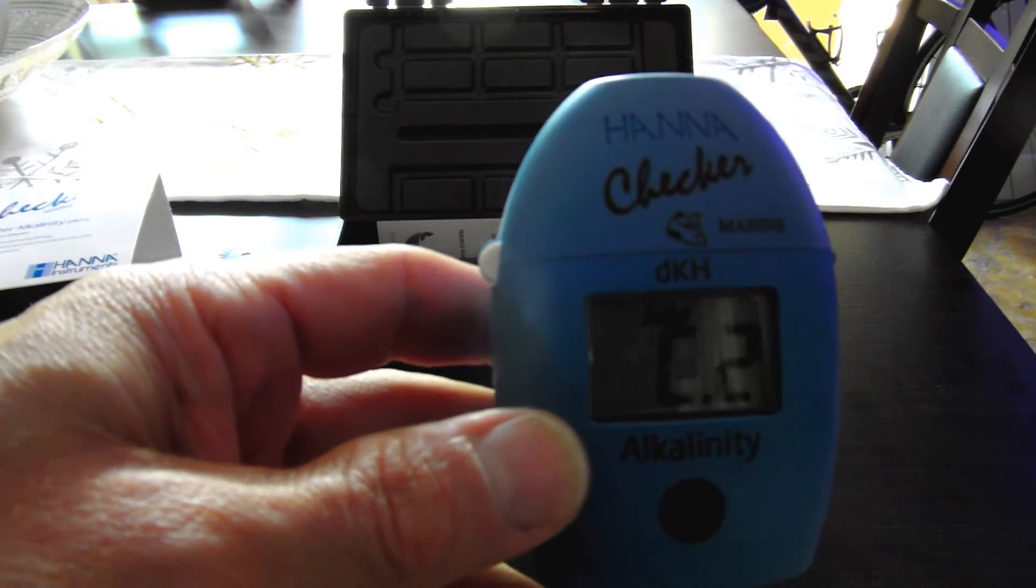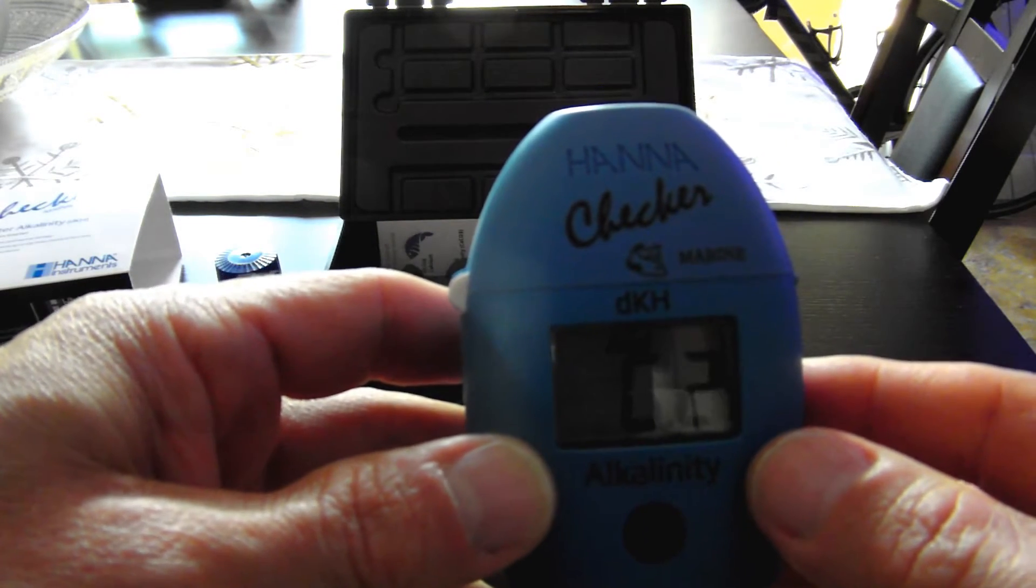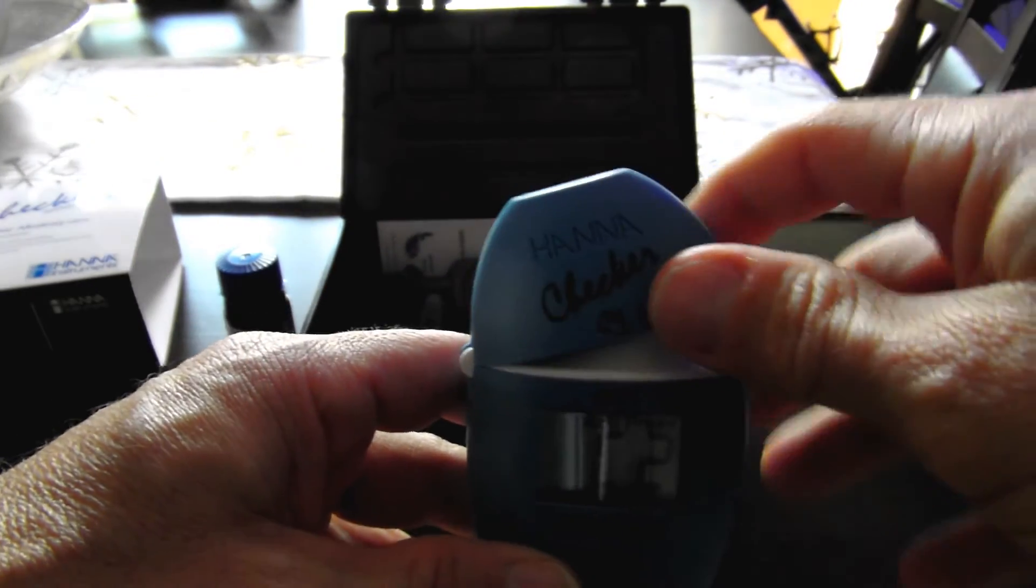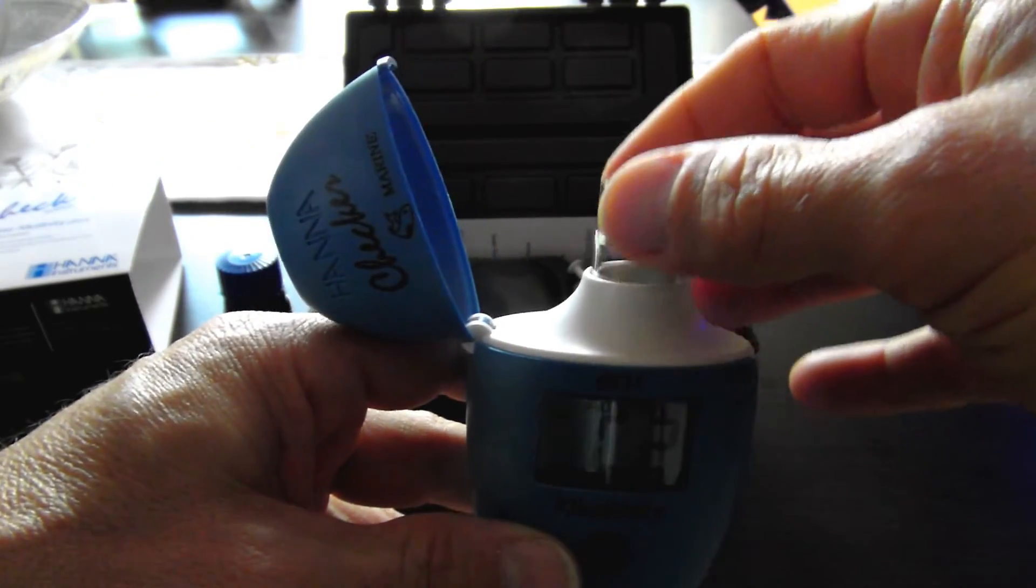This is zeroing the unit out. All right, now it wants C2, which means I'm going to add the reagent. I'll open up the lid and remove the cuvette.